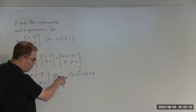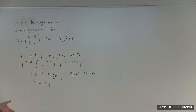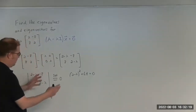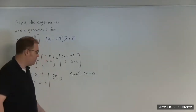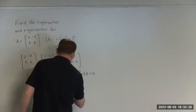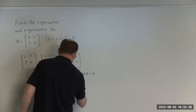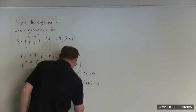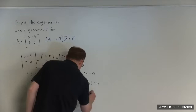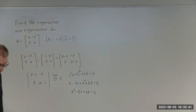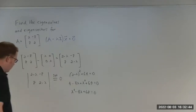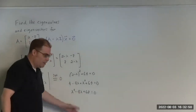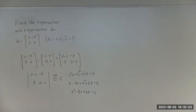You can actually move the 64 over and take the square root of both sides, but I'm going to take the more general approach — expand everything out, get a second-degree polynomial, and use the quadratic formula. This gives us 4 − 4λ + λ² + 64 = 0, so we end up getting λ² − 4λ + 68 = 0. Just by looking at this, you can see that the discriminant will be negative, which means this will have imaginary values.